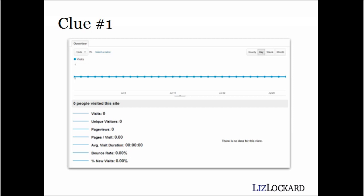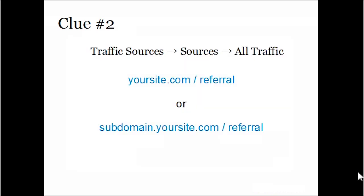Clue number one that your Google Analytics is not set up properly on your site is that when you log in, you get this screen. You have absolutely no visitors, even after you know that other people have visited your site for a month or a year, however long you've had it set up. You have a flat line, no visitors. That's the first clue.